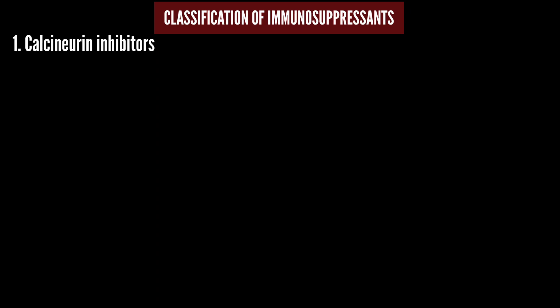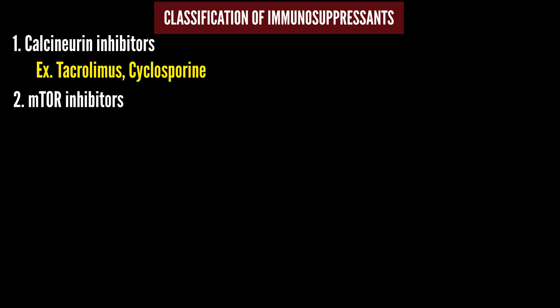Classification of immunosuppressants: there are 5 categories. The first category is Calcineurin Inhibitors — drugs that bind and inhibit calcineurin, thereby reducing immunity. Examples include Cyclosporine and Tacrolimus. The second category is mTOR Inhibitors — mTOR stands for Mammalian Target of Rapamycin. Drugs in this category share a common '-limus' suffix. Examples include Sirolimus and Everolimus.